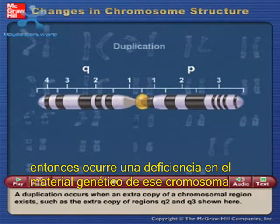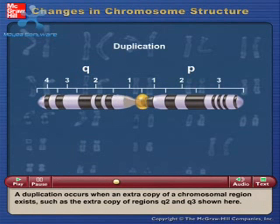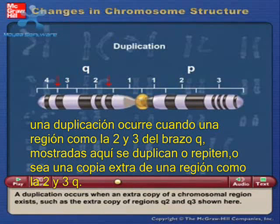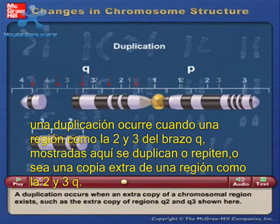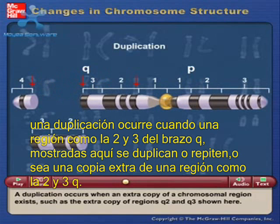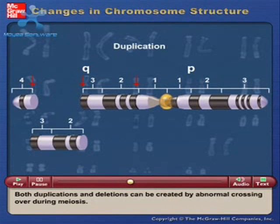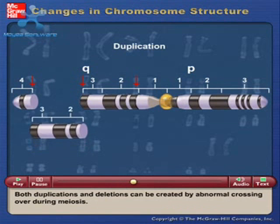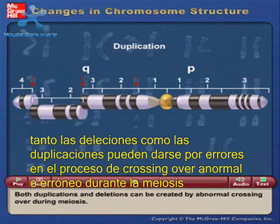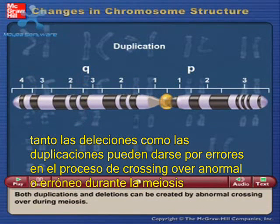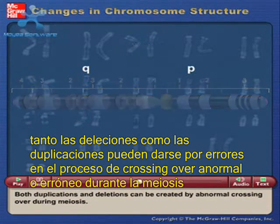A duplication occurs when an extra copy of a chromosomal region exists, such as the extra copy of regions Q2 and Q3, shown here. Both duplications and deletions can be created by abnormal crossing over during meiosis.